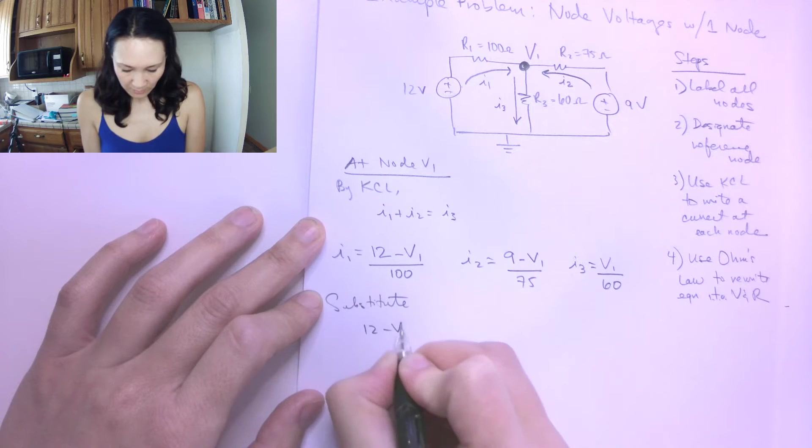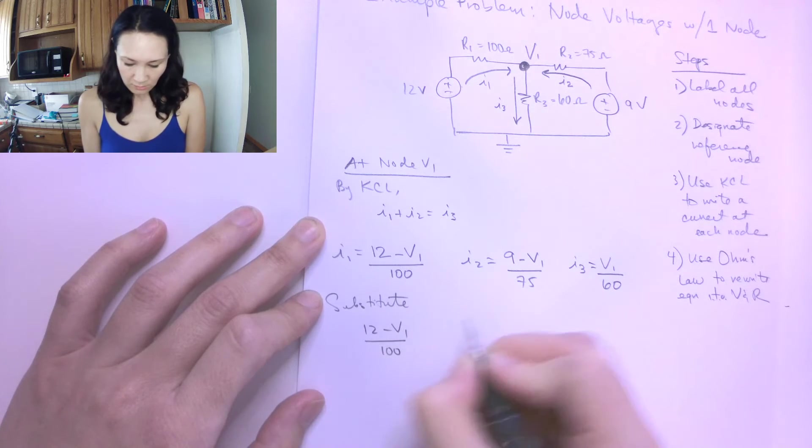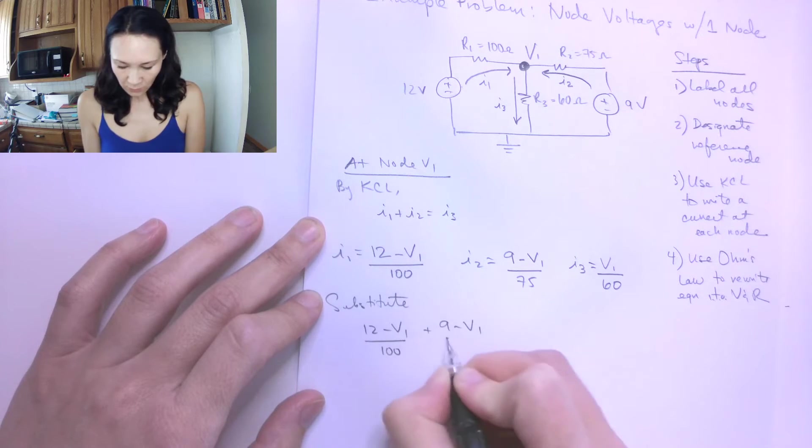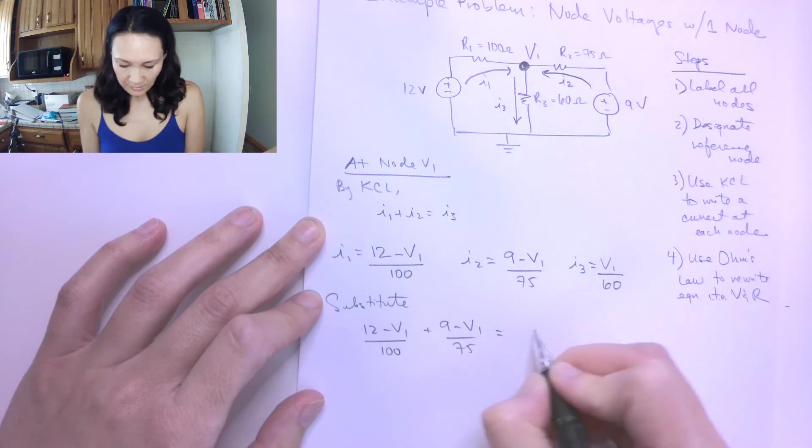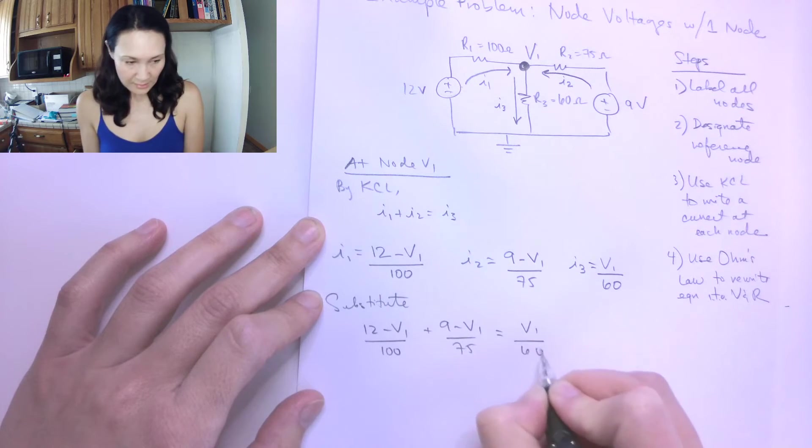So that gives me 12 minus V1 over 100 plus 9 minus V1 over 75 is equal to V1 over 60.